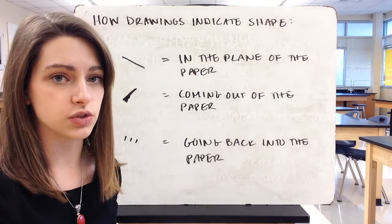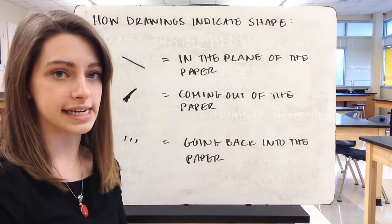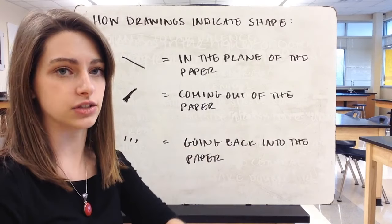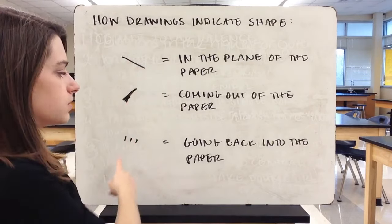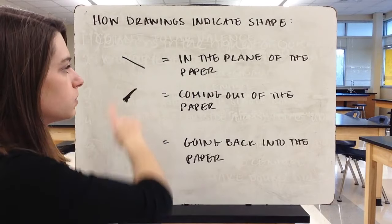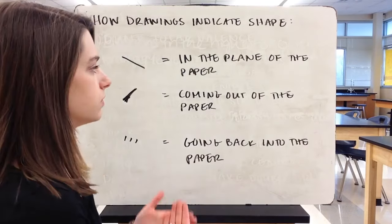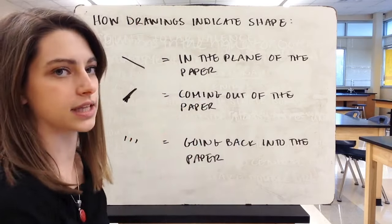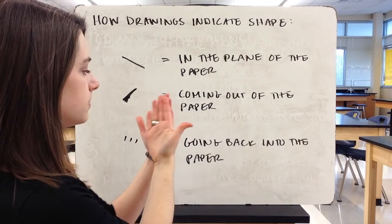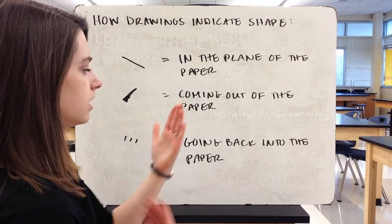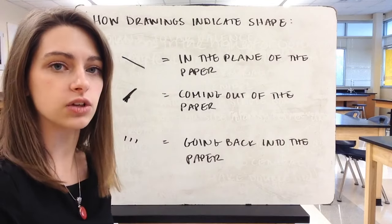Since we're drawing these structures on 2D paper, we need to visualize the 3D molecular geometry and turn it back into a 2D drawing. Here are the guidelines for drawing: a normal straight line means the bond is in the plane of the paper. A wedge means it's coming out of the paper towards you. A dotted line means it's going back into the plane of the paper, away from you.